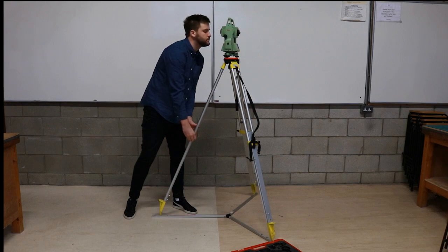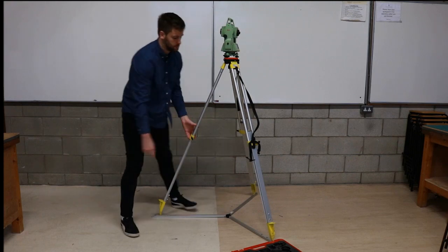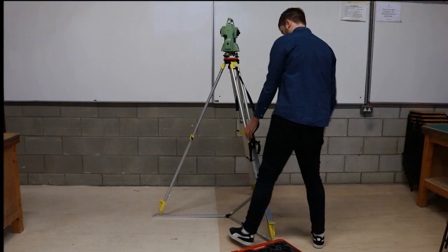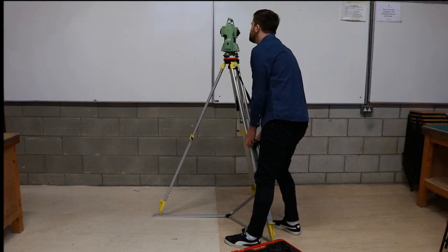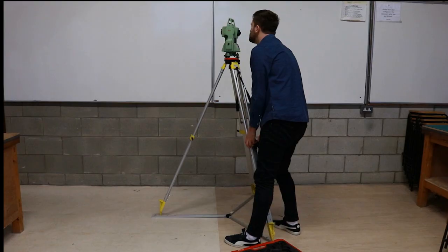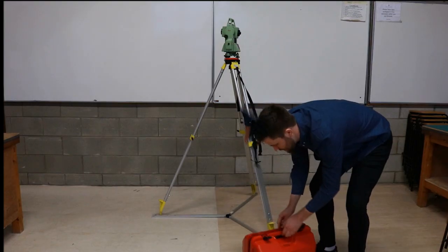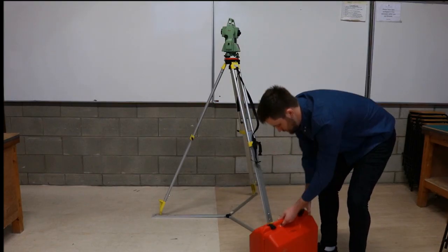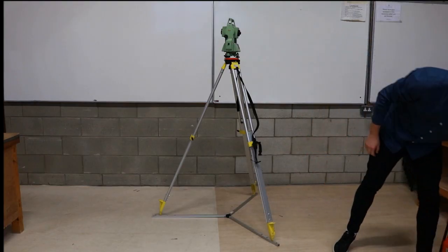Adjust the length of the tripod legs to get the plate bubble to move approximately to the center. This will make it much easier for you to level the total station later with the foot screws. Make sure you close up the total station case and place it out of the way in case you trip over it or knock the total station over.